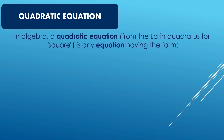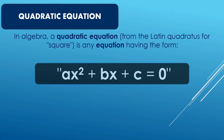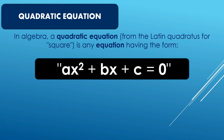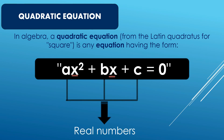In algebra, a quadratic equation — from the Latin 'Quadratus' for square — is any equation having the form ax squared plus bx plus c equals zero. Remember that a quadratic equation in standard form is equal to zero, where x represents an unknown and a, b, and c are real numbers.